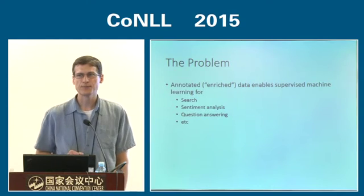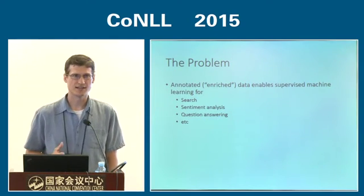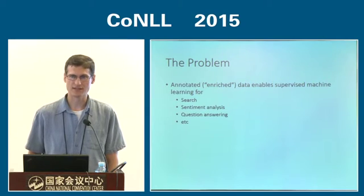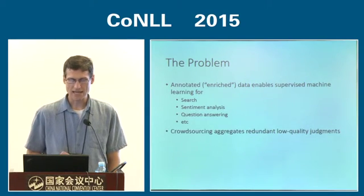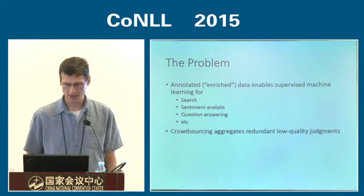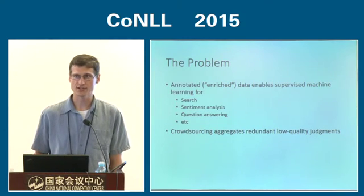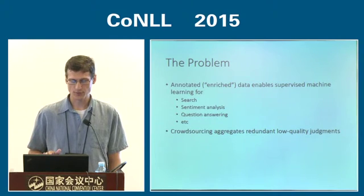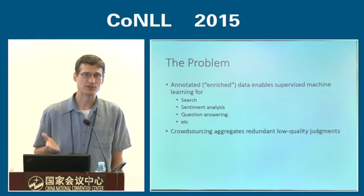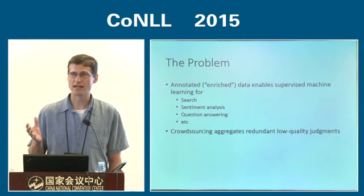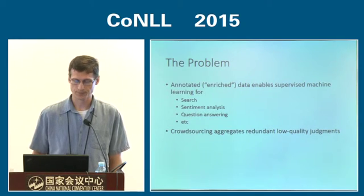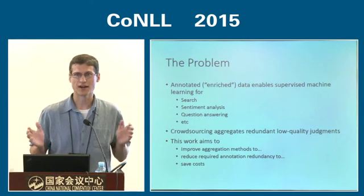The problem is that we want to put together annotated datasets in support of things like supervised machine learning that enable important tasks — search, sentiment analysis, question answering. Instead of paying high-quality and expensive experts to generate these labels, we go to a place like Mechanical Turk or CrowdFlower and pay internet workers. To account for the fact that some annotators aren't trustworthy or able to do the task well, we get multiple judgments per document and aggregate them using something like majority vote.